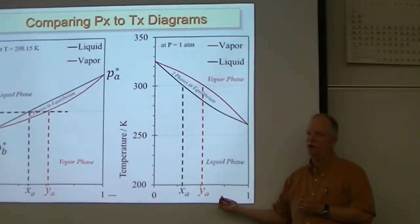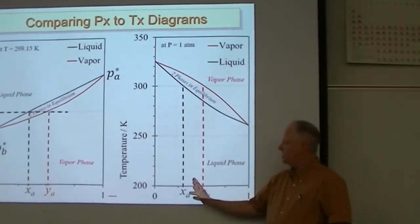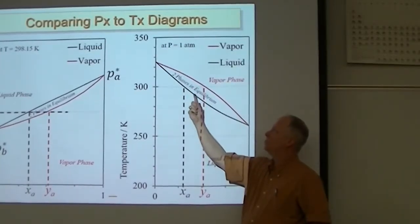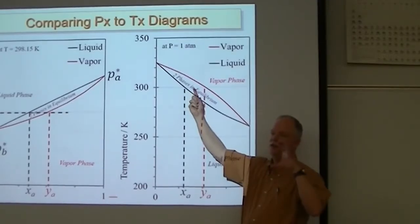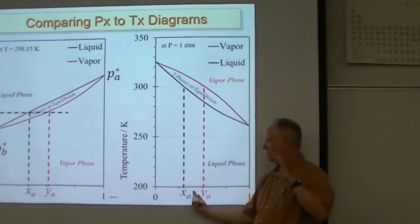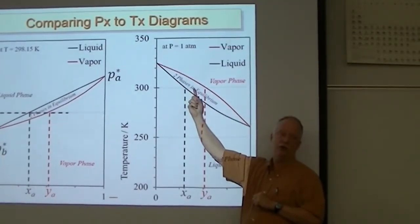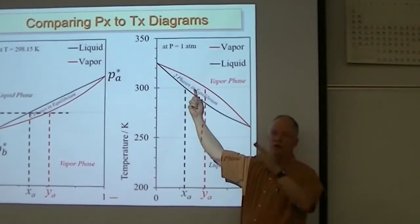I prefer temperature-composition phase diagrams, and you'll see more of those moving forward. Now, where would Z be in all of this? Z might be in the middle as the overall composition. If we get it above its boiling point in a pressurized vessel at one atmosphere, and the overall composition is right in the middle, then 50% of my moles are in the vapor phase and 50% are in the liquid phase. X is the liquid phase composition, Y is the vapor phase composition, and Z is the overall composition in the whole container.